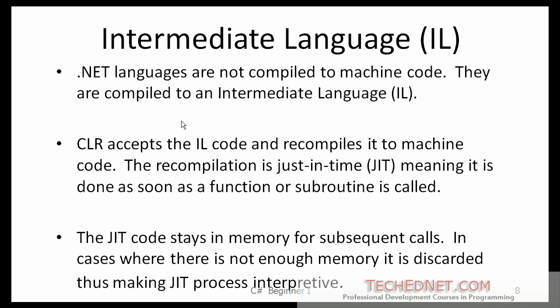What is intermediate language, or IL? .NET languages are not compiled to machine code directly as they would be in a language like C. They are compiled to an intermediate language code. The CLR then accepts the IL code and recompiles it to machine code. The recompilation is just-in-time, meaning it is done as soon as the function or subroutine is called. The just-in-time compiler code stays in memory for subsequent calls. In cases where there is not enough memory, it is discarded, thus making the JIT process interpretive.